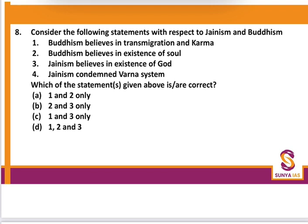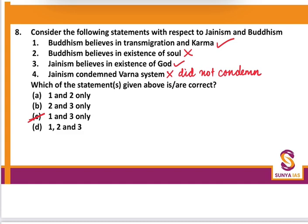Question 8: Statements about Buddhism and Jainism. Statement 1 — Buddhism believes in transmigration and karma, so they believe in the existence of soul: incorrect — they believed in Anicca (impermanence), they did not believe in soul. Statement 2 — Jainism believes in the existence of god: yes, they said if god exists, he is below the Tirthankar. Statement 3 — Jainism condemned the varna system: incorrect, they believed in the varna system. So C is the correct option. Jainism does believe in soul — both animate and inanimate.